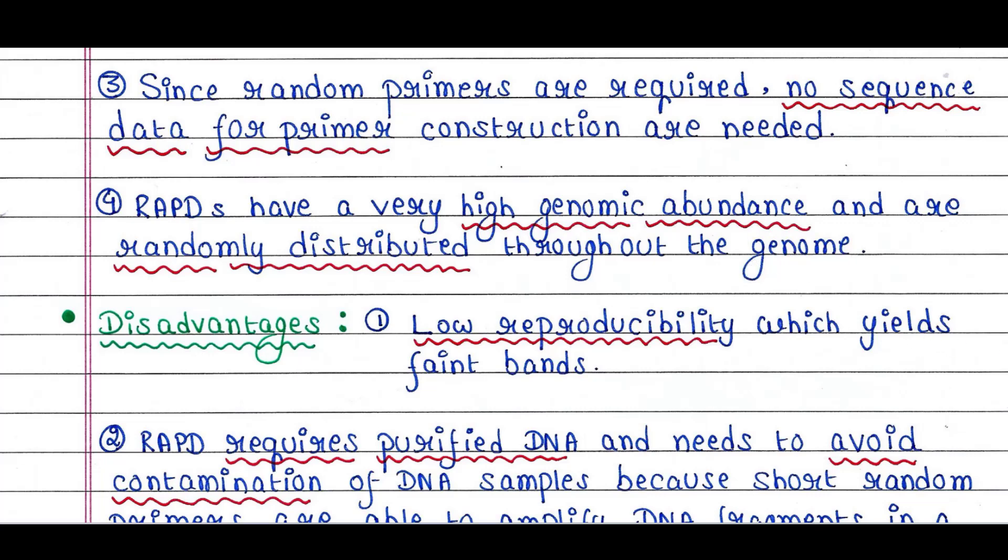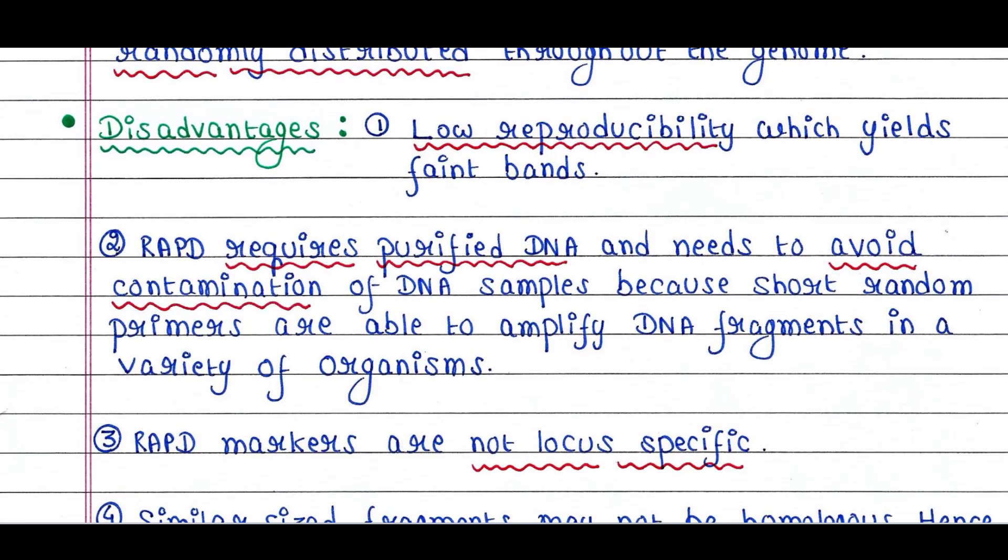Now we will see some disadvantages of this technique. Low reproducibility which yields faint bands. Since non-specific primers are used, the amount of PCR products are not as much as normal PCR generates. Hence, it yields faint bands sometimes.